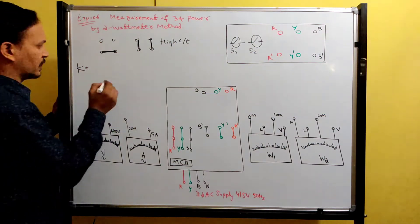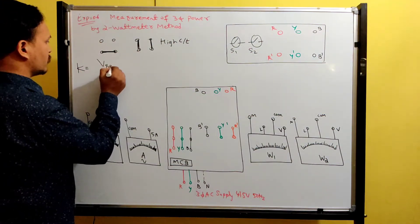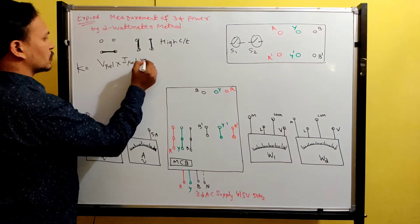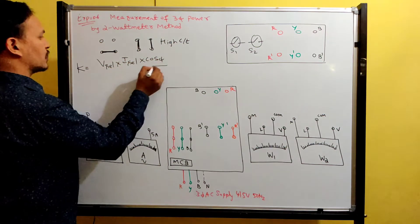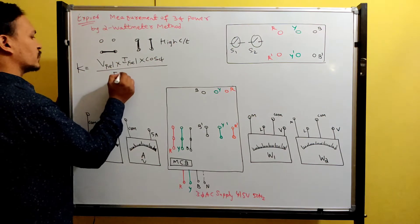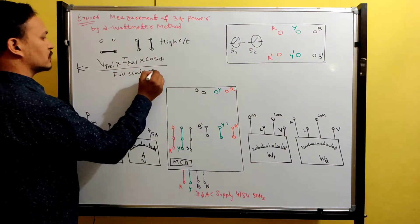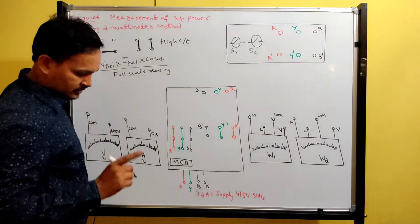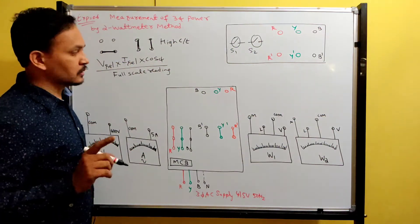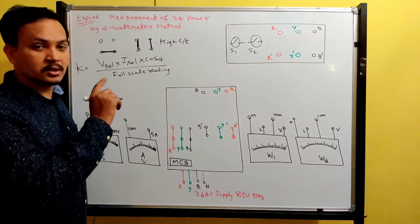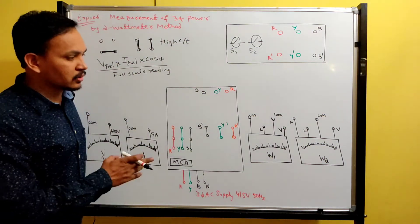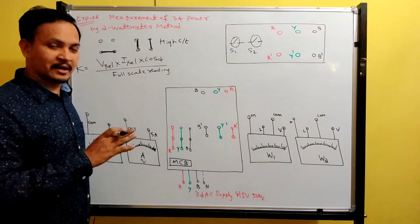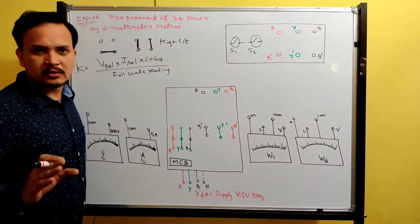The general formula for wattmeter constant is: voltage selected multiplied by current selected multiplied by power factor (that is cos φ), divided by full scale reading. The examiner or professor will ask you to find the wattmeter constant — without knowing the wattmeter constant, they won't allow you to do the connections.